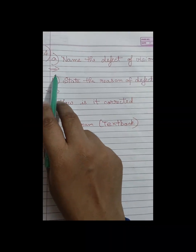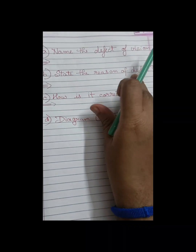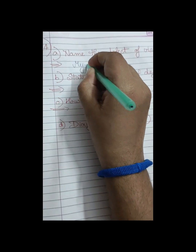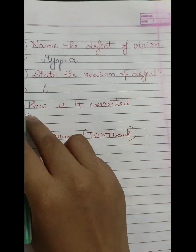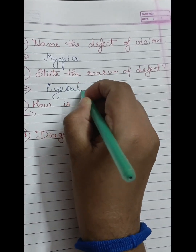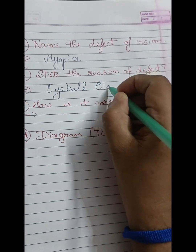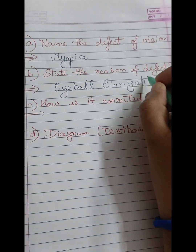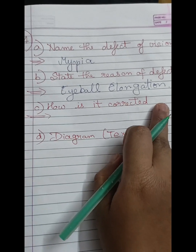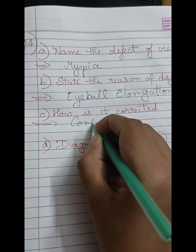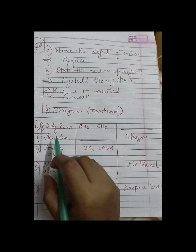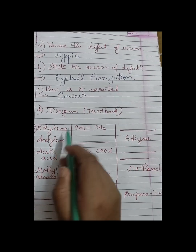Question 4A: Name the defect of vision shown in the diagram — three rays converging before the retina, so it is myopia. The reasons for myopia include eyeball elongation. It is corrected using a concave lens; the diagram is given in the textbook.